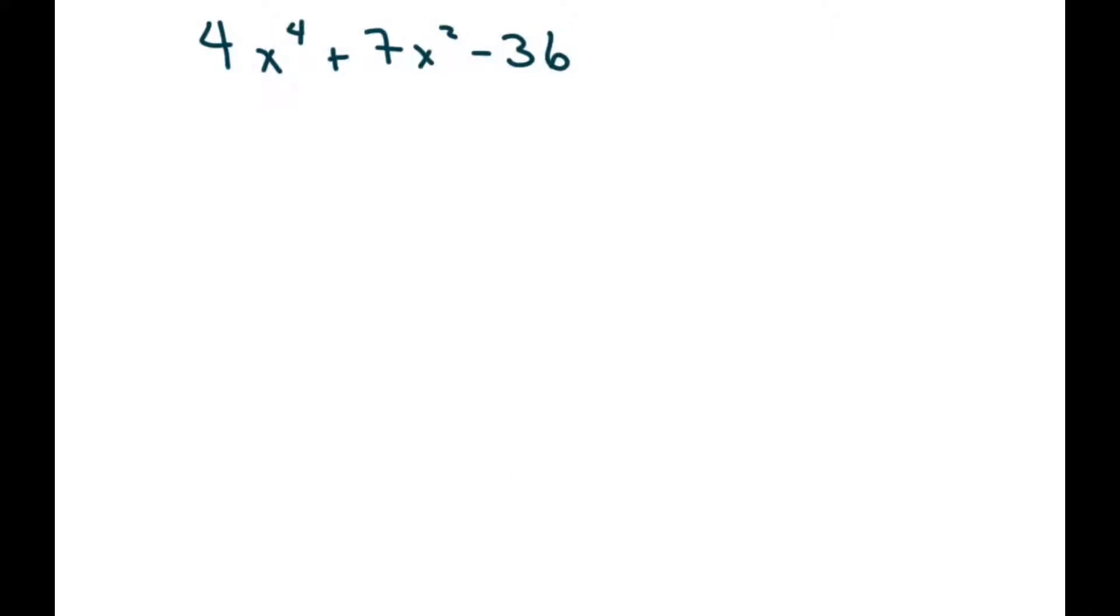On this one, my first reaction is because these are both perfect squares to do something like this and just take the square root of that. But what I notice is that this is a negative, and if you have a positive and a negative, it's not going to give you that 7x.